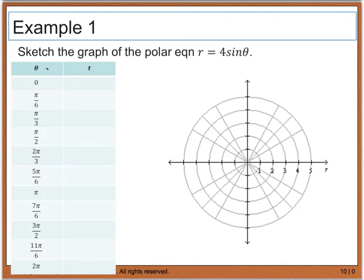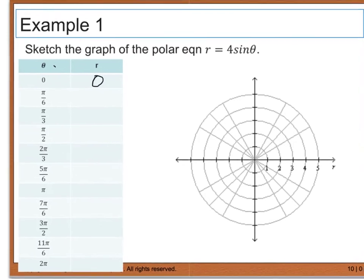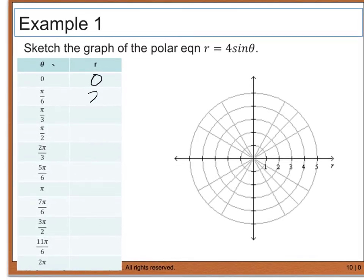And then we're going to go ahead and solve for r at each one of those theta values. So when I plug a 0 in, the sine of 0 times 4 is 0. When I plug in pi over 6, the sine of pi over 6 is 1 half, and I multiply that by 4, and we get 2. When I plug in pi over 3, we end up with 2 square roots of 3. When I plug in pi over 2, I end up with 4.